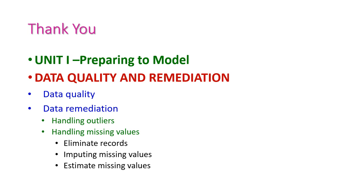We have seen data quality and remediation from the first unit, preparing to model — the second chapter. In this class, we learned about data quality and data remediation. If there is any problem in quality, how it should be remediated. When it comes to data remediation, two important issues are there: first is handling outliers, and second is handling missing values. In handling missing values, we covered eliminating records, imputing missing values, and estimating missing values. In the next class, we will see another important topic from the first unit. Thank you.